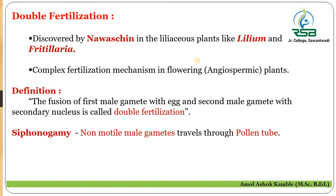Our next and most important point is double fertilization. In angiospermic plants, the process of double fertilization is unique — it is not found in any other plant group such as algae, fungi, bryophytes, pteridophytes, or gymnosperms. Double fertilization is therefore a key characteristic of angiospermic plants. It was discovered by the scientist Navaschin in liliaceous plants like Lilium and Fritillaria. It is a complex process found in flowering, that is angiospermic, plants.